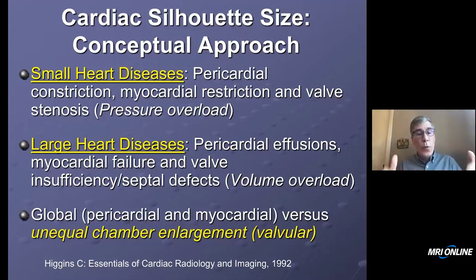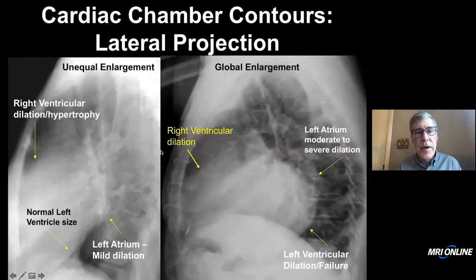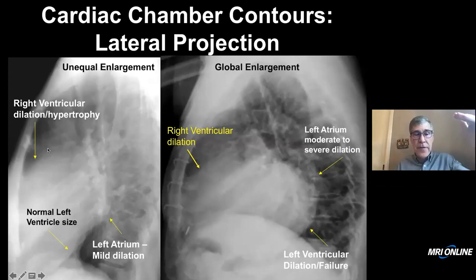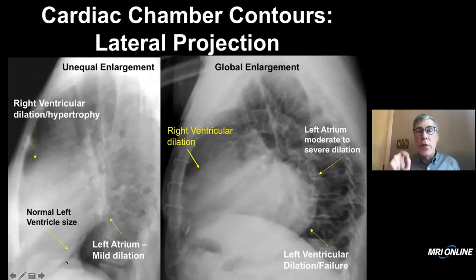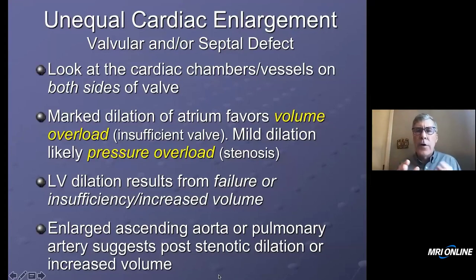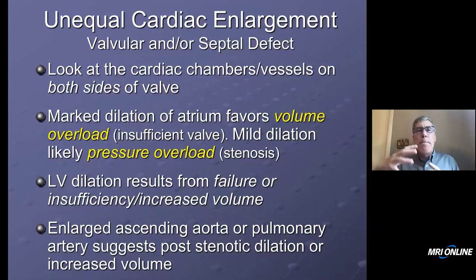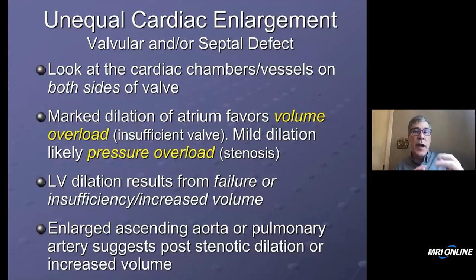We're going to look at unequal chamber enlargement — for example, the right ventricle enlarged, the left atrium mildly dilated, and the left ventricle normal. This usually indicates valvular disease. There tends to be massive dilation of the right or left atria in the setting of insufficiency because of the volume, and the ventricles on the other side will also tend to be dilated because volume induces dilation.